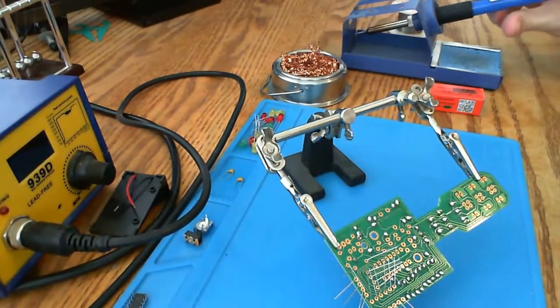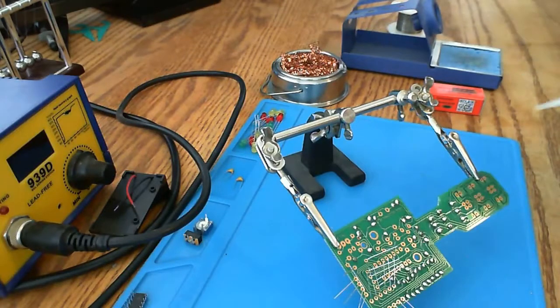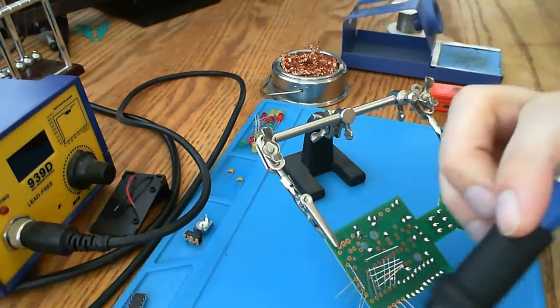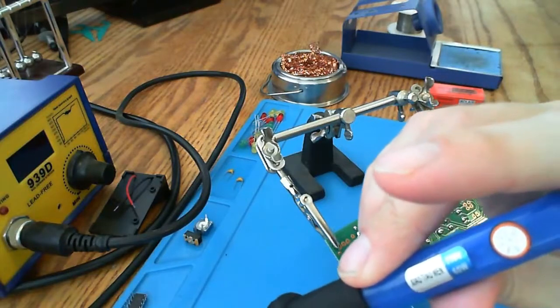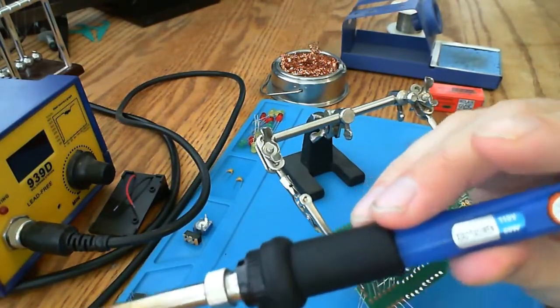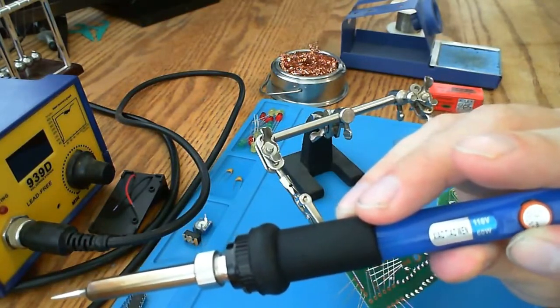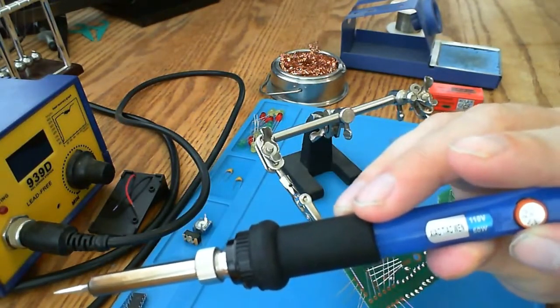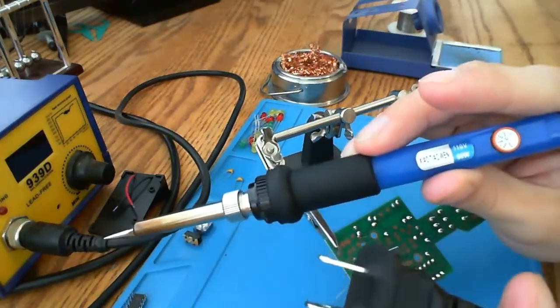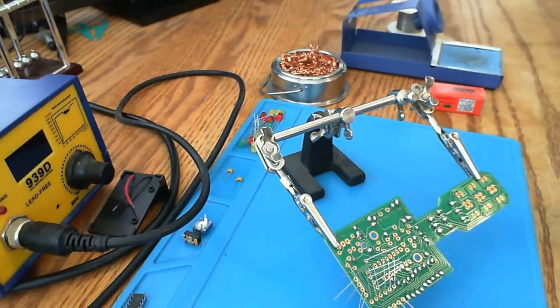Hey there, so I got this new soldering iron in the mail today. It is a 110 volt 60 watt with an adjustable temperature knob right here and it just plugs straight into the wall socket.